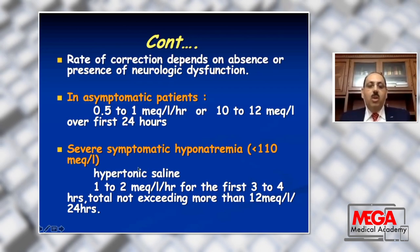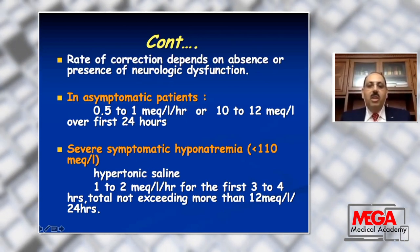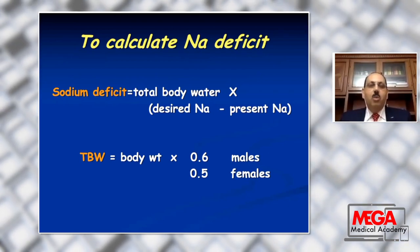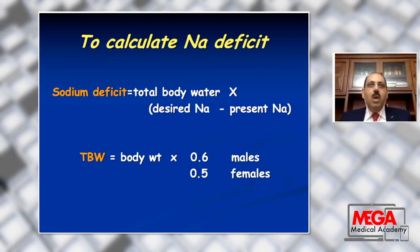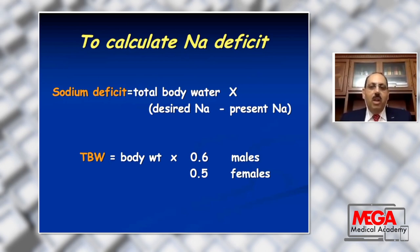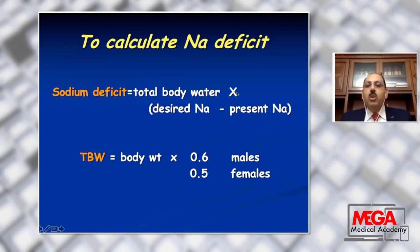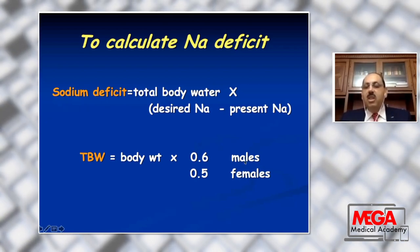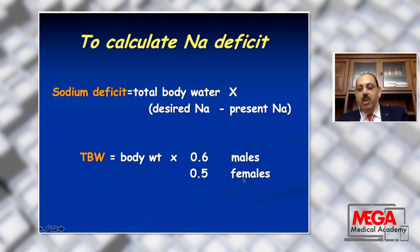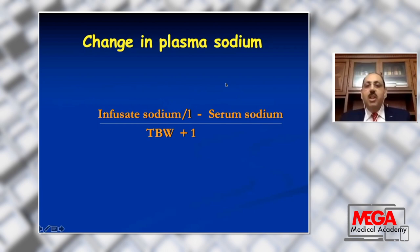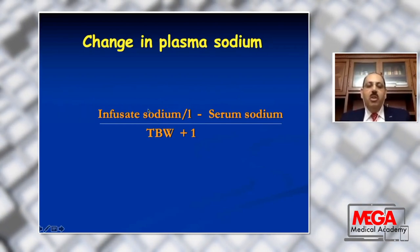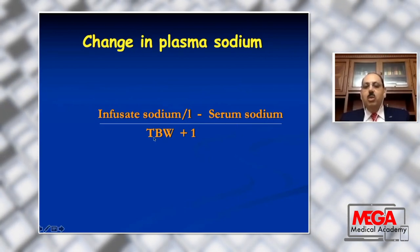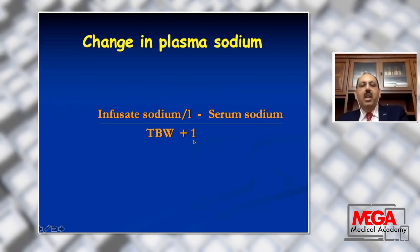Maximum over 24 hours should not exceed 10 to 12 mEq per liter, using normal saline or hypertonic saline in severe symptomatic hyponatremia. To calculate the sodium deficit, we have an equation. The sodium is mainly intravascular and the intracellular compartment is only 10 mEq. The equation to correct the intravascular deficit equals total body water multiplied by desired sodium minus the present sodium. Total body water equals body weight multiplied by 0.6 if the patient is male, and 0.5 if female. To calculate the rate of infusion, use: infusate sodium — if using hypertonic saline 3% which contains 513 mEq/L — minus serum sodium, over total body water plus 1.